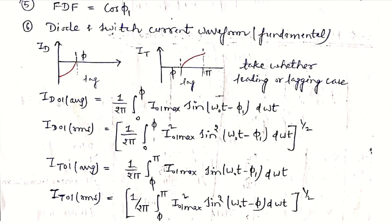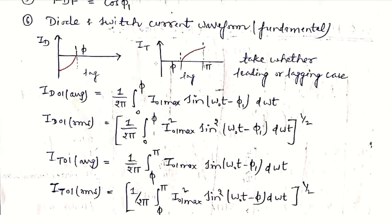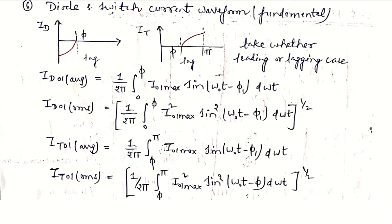To calculate the average current of the fundamental component across the diode, I_D01_avg = (1/2π) ∫₀^φ I₀1_max · sin(ω₀t − φ₁) dω₀t, using n = 1 for fundamental and −φ₁ for the lagging load case. For the RMS value, we square the waveform and take the root mean. Similarly for the thyristor, we integrate from phi to 2π for the average, and square the waveform for the RMS. In this way, we complete the RLC load case for the half bridge configuration.